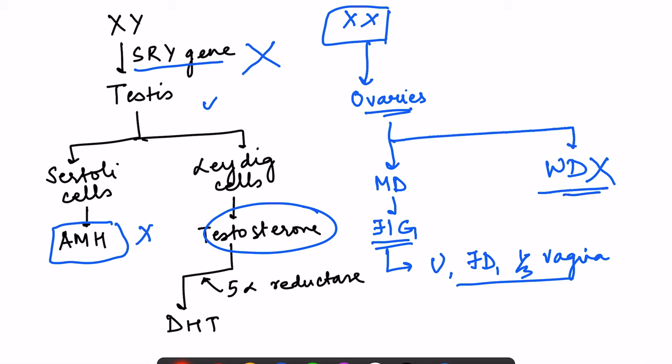Because there is no testosterone, the Wolffian duct regresses — testosterone is required for its sustenance. With no Wolffian duct, male internal genitals do not form. Similarly, with no testosterone there is no DHT, so female external genitals form by default. In summary, if XY is absent, by default ovaries, female internal genitals, and female external genitals will develop.